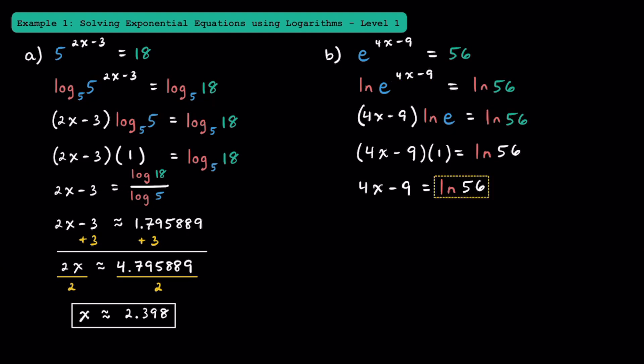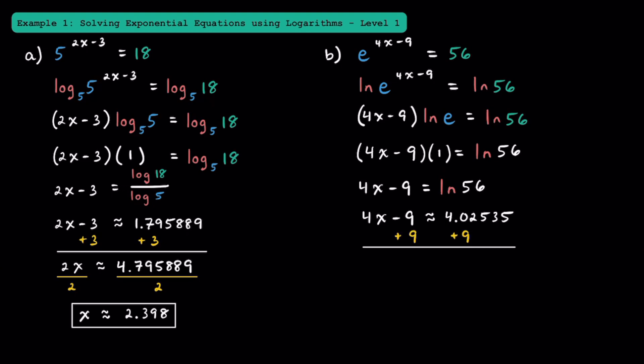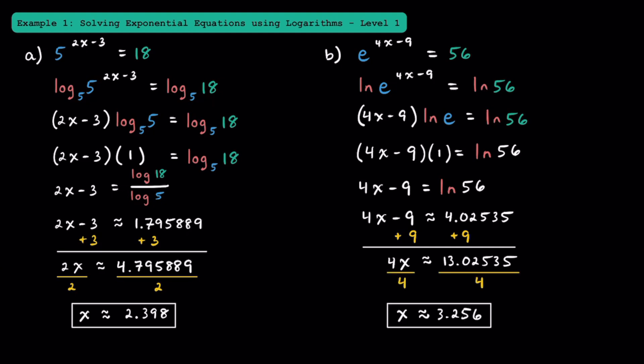Putting this into a calculator, we find that 4x minus 9 is approximately 4.02535. Solving this like a normal equation, let's add 9 to both sides, and we find that 4x is about 13.02535, and dividing both sides by 4, we find that x is about 3.256.